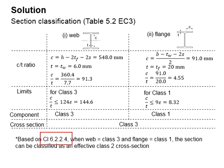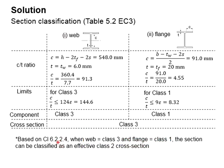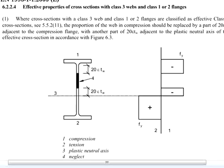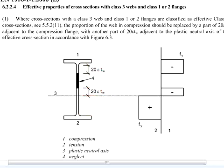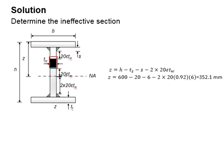The cross section is considered class 3 due to the more critical classification. However, based on clause 6.2.2.4, when the web is class 3 and the flange is class 1, the section can be classified as an effective class 2 cross section. With that, there will be an ineffective region on the web, which is the area left after subtracting 20 epsilon t_w from each side and 20 epsilon t_w from the other side.